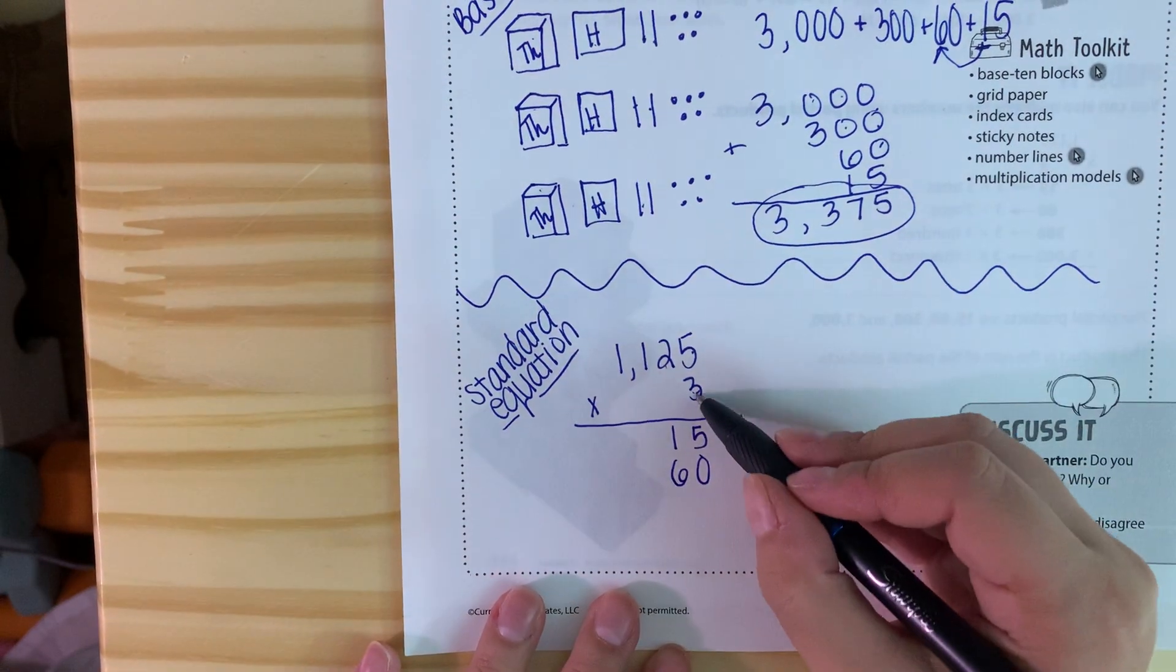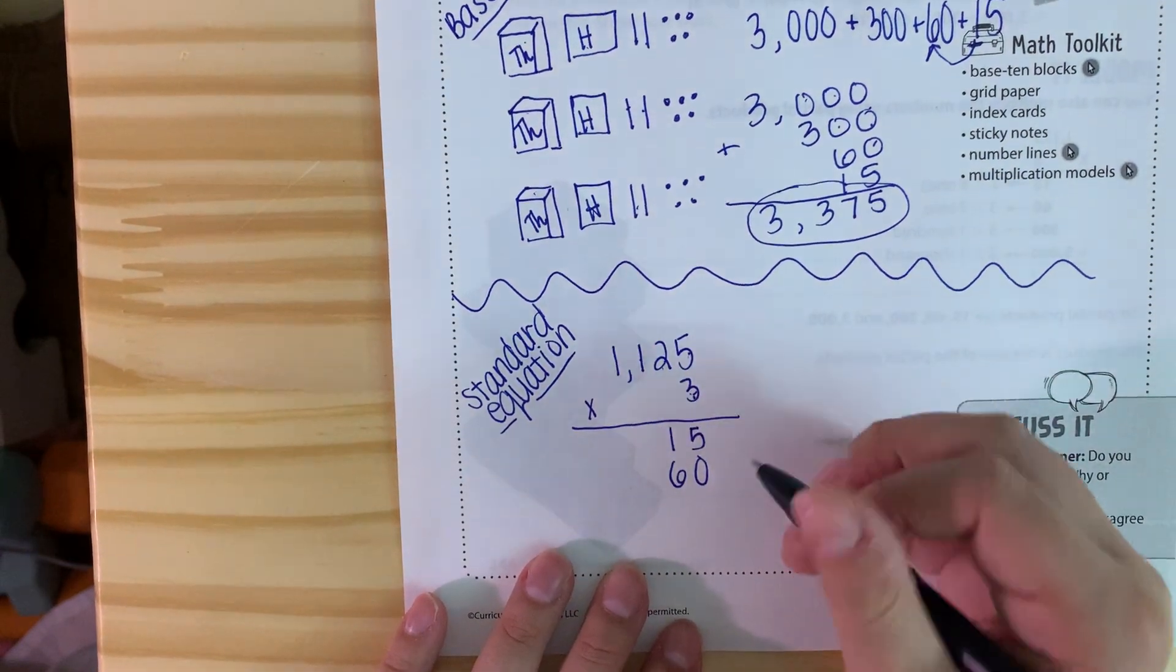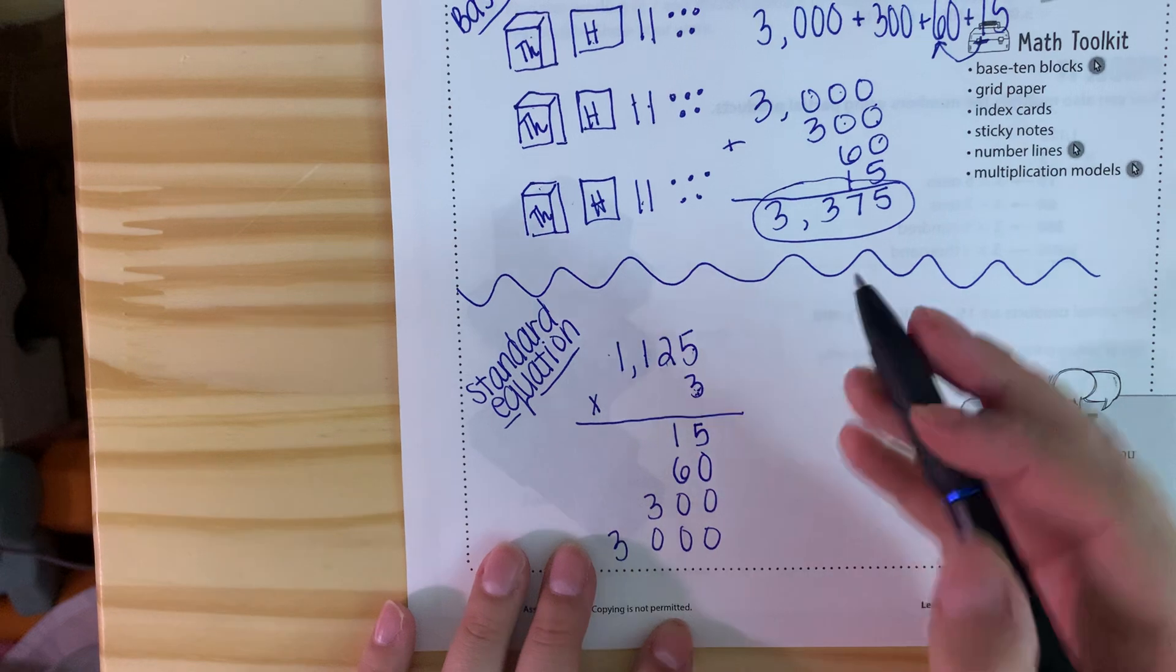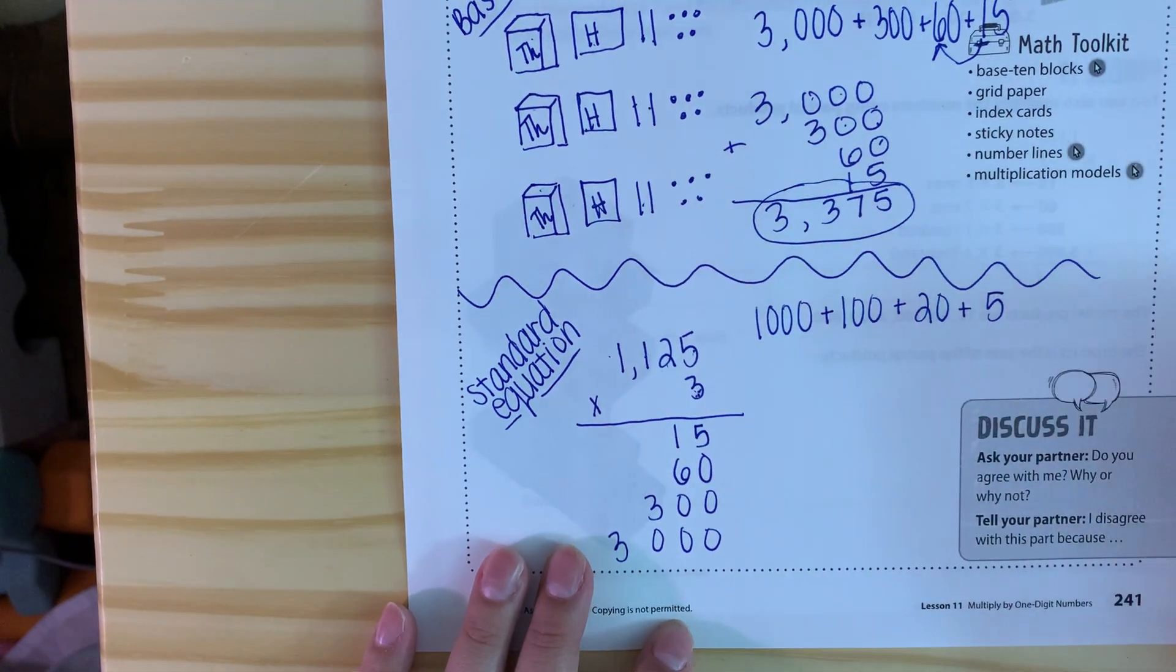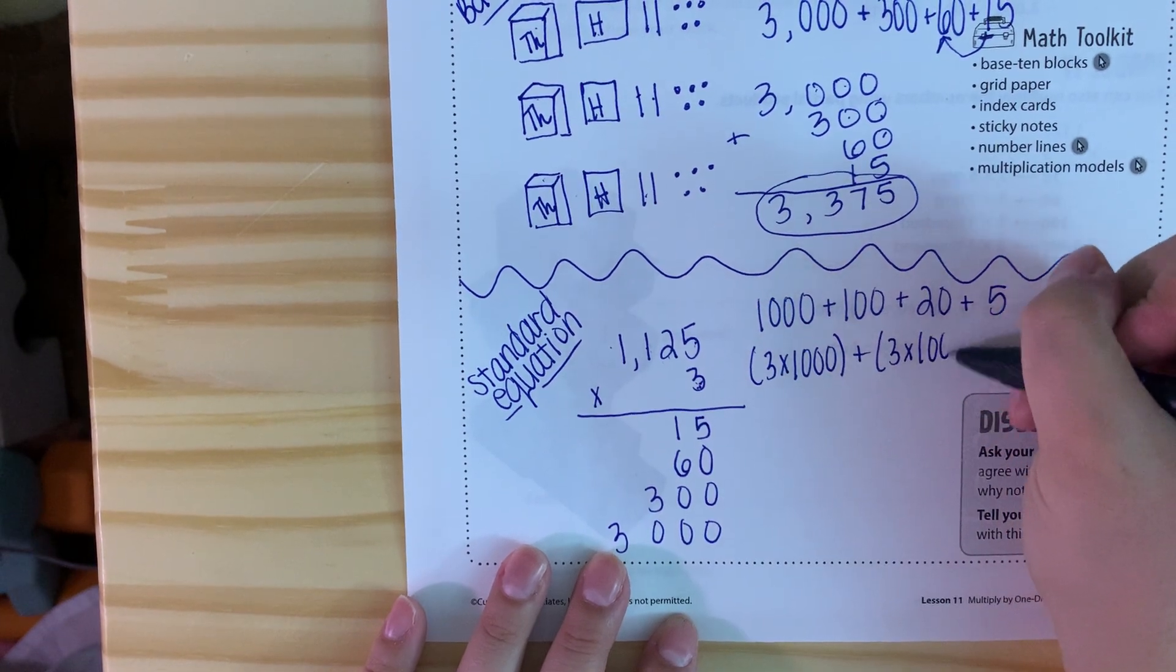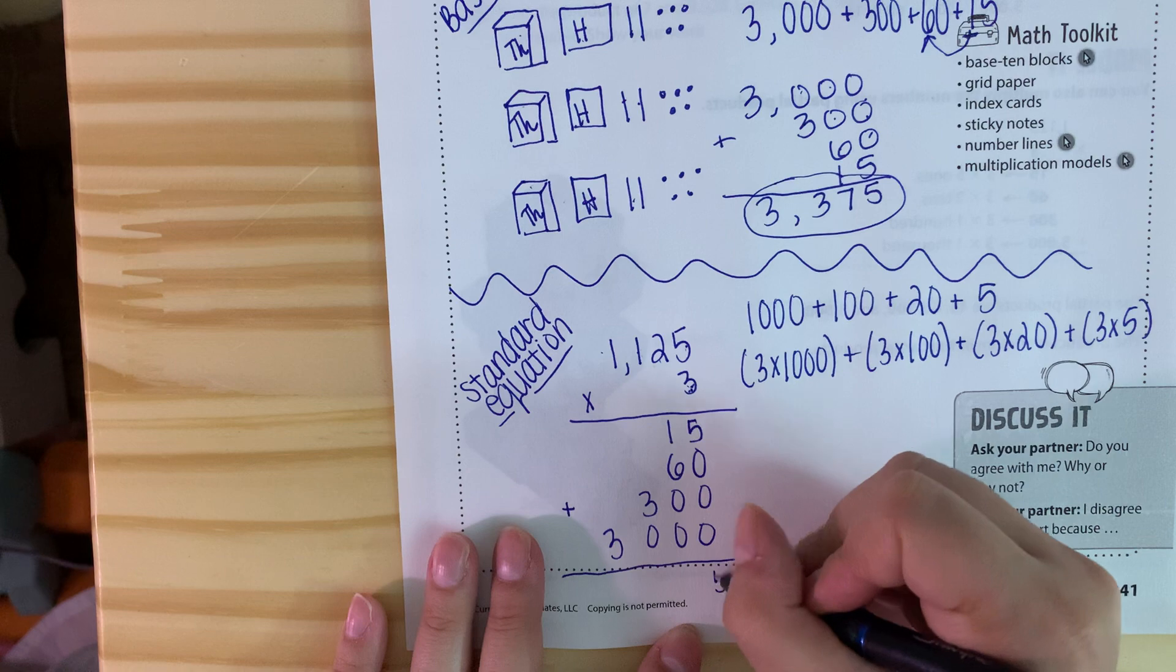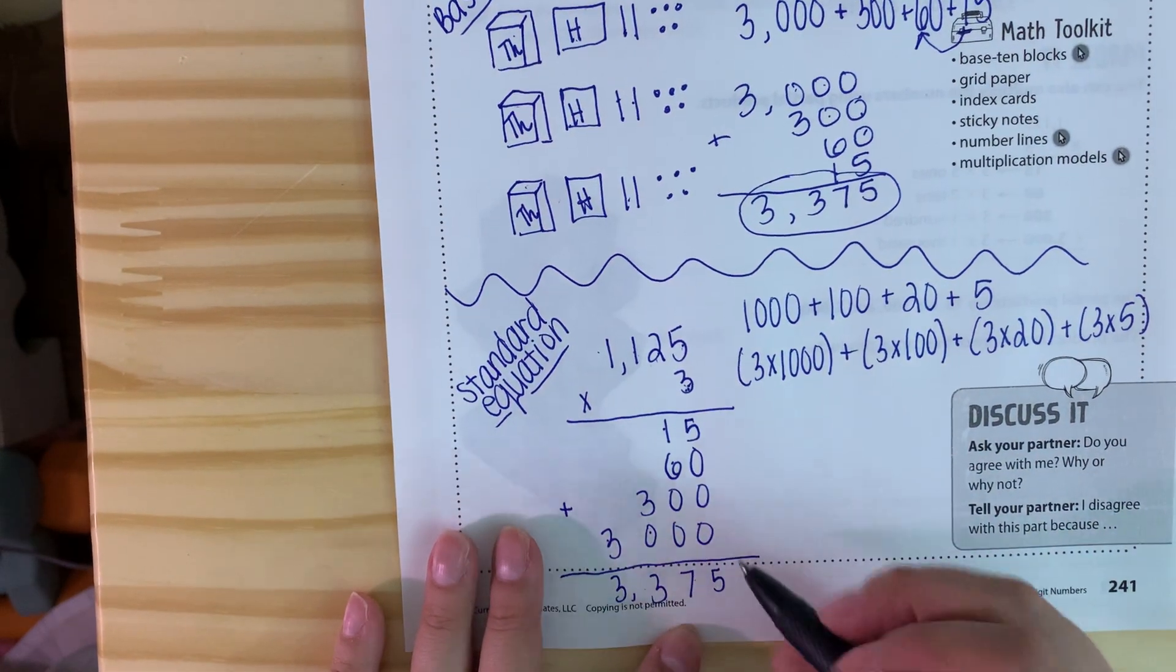So two tens is equal to 20 because it's 10, 20. So 3 times 20, 3 times 2 is 6 add a 0. 3 times 100, because remember 100 is 100, right? So 3 times 100 is 300. And then 3 times 1,000. 3 times 1 is 3, and then because it's in the thousands place you need to make sure you add those zeros. So 5 plus nothing is 5, 1 plus 6 plus nothing is 7, 3 plus nothing is 3, 3 plus nothing is 3. So we get the 3,375 that we got up here.